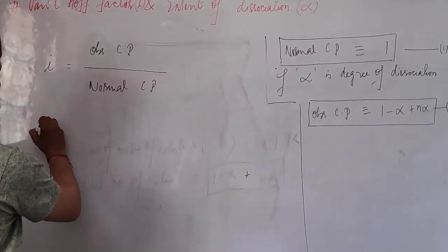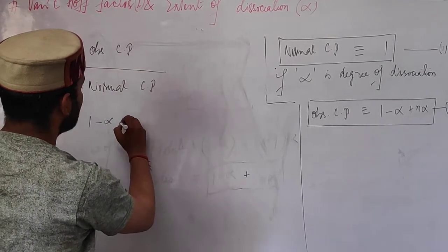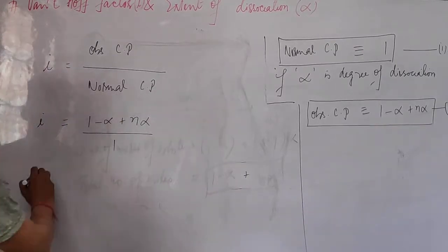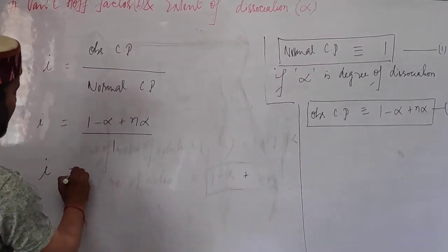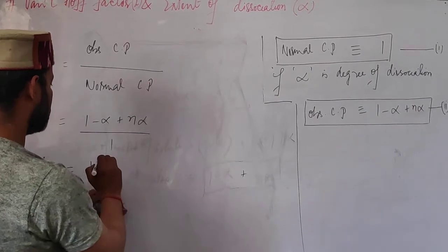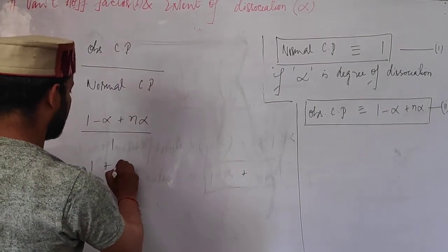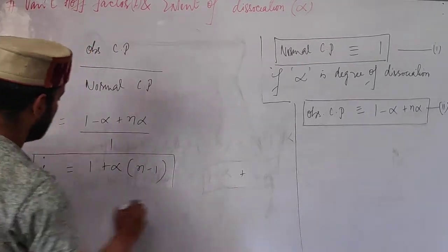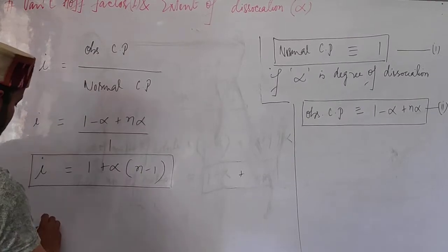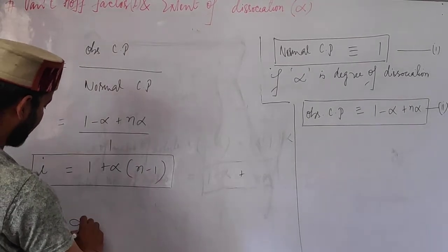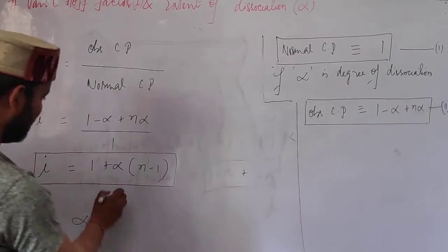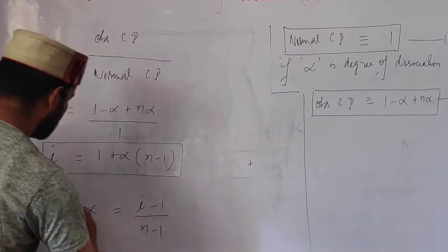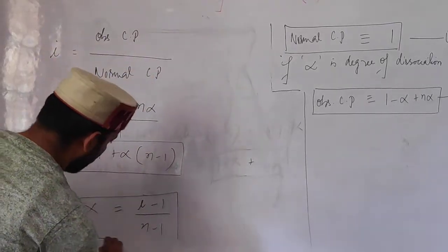Iota is defined as observed colligative property divided by normal colligative property. The observed colligative property corresponds to (1 − alpha + n·alpha) moles, and the normal corresponds to 1 mole. Therefore iota = 1 + alpha(n − 1), and from this we can find alpha = (iota − 1) / (n − 1).